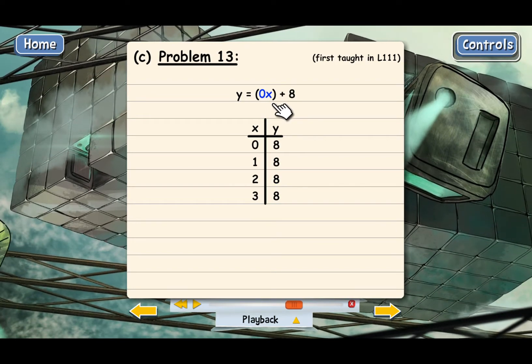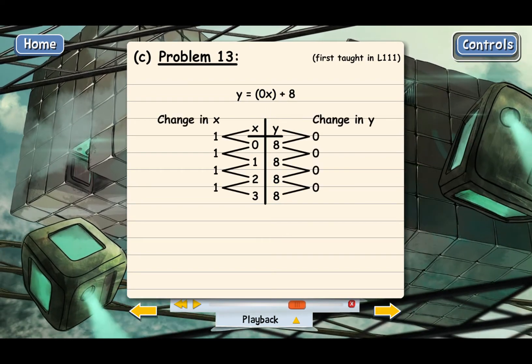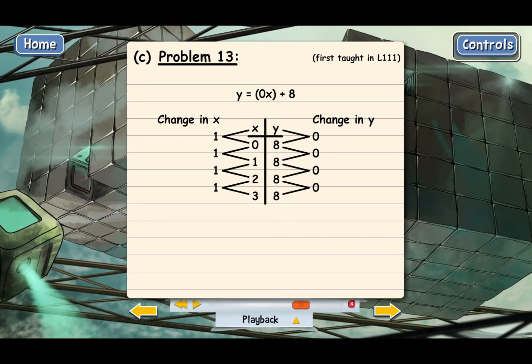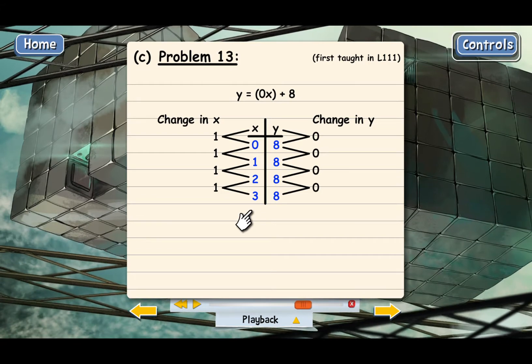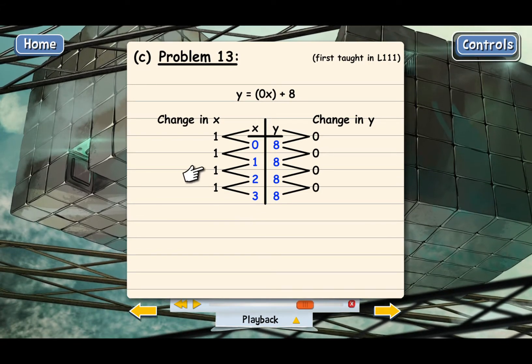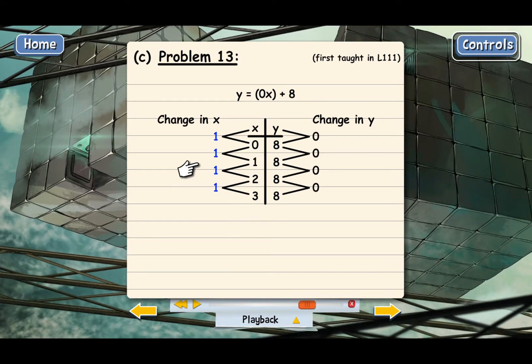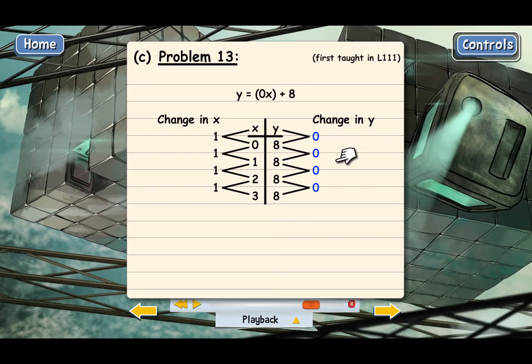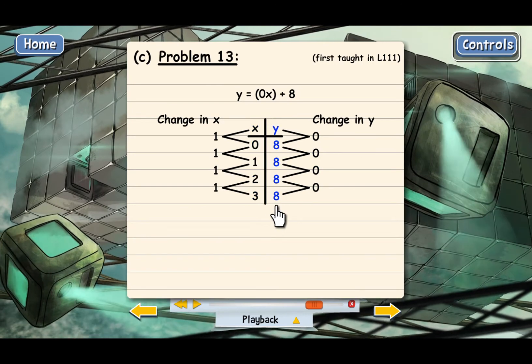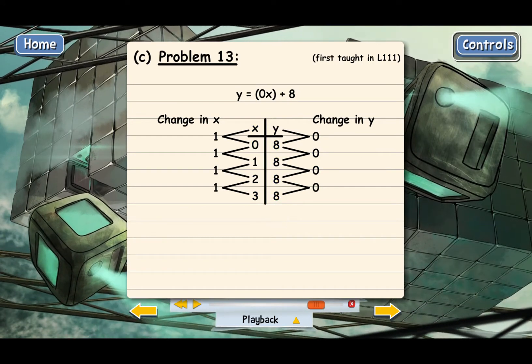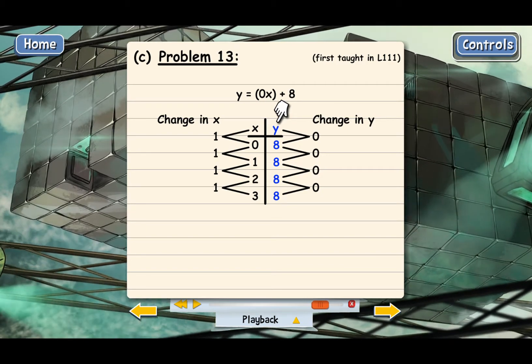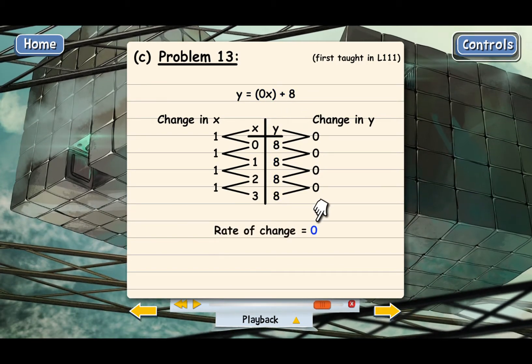Anything times 0 is going to be 0. Now we can look at the rate of change for the x and the y. For these four coordinate pairs, you can see that we are adding 1 each time to x, and that the change in y is 0 every time. No matter what you put in for x, the y value is always going to be 8. In a case like this, if y doesn't change, then the rate of change for this equation is going to be 0.